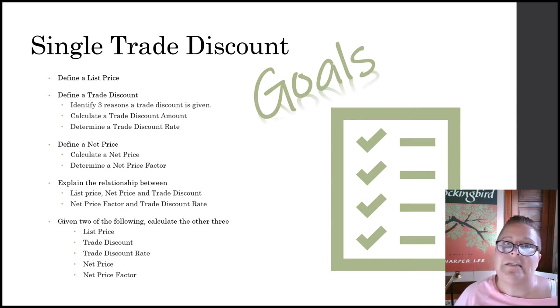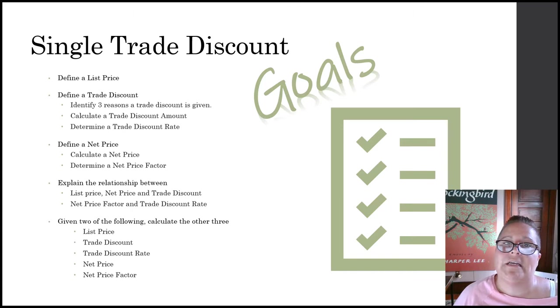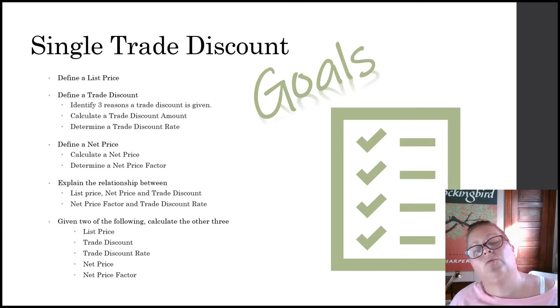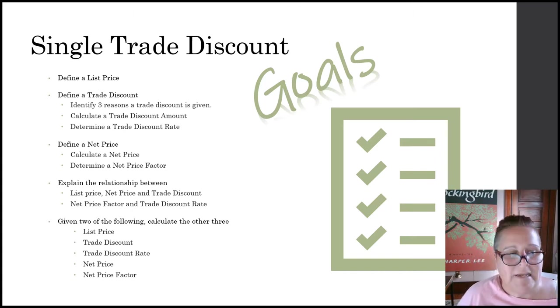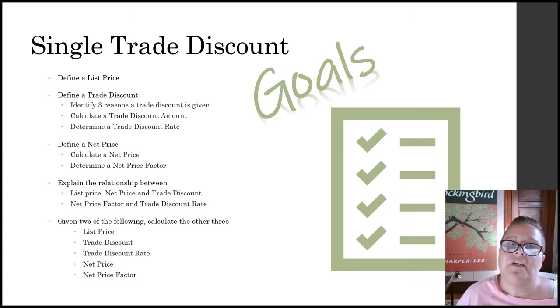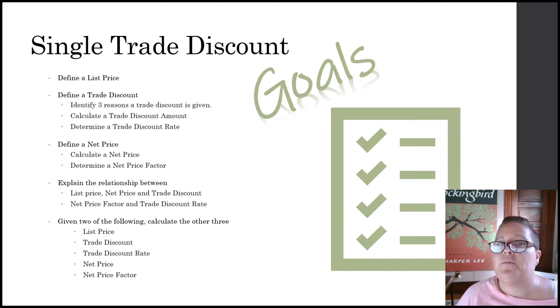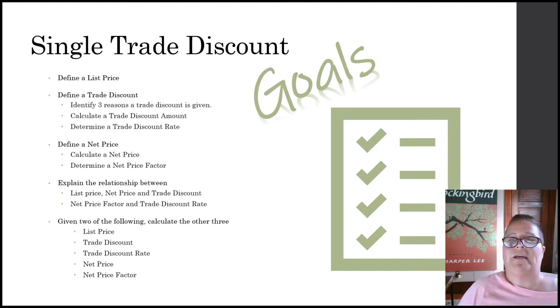Once we have all of that straightened out, what we would like for you to be able to do is, given any two of the following pieces of information, be able to calculate the other three. So between a list price, a trade discount, a trade discount rate, the net price, and the net price factor — given any two pieces of information, you should be able to find the other three.